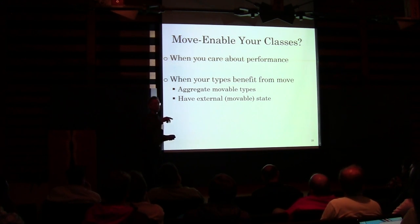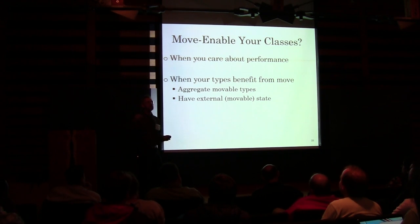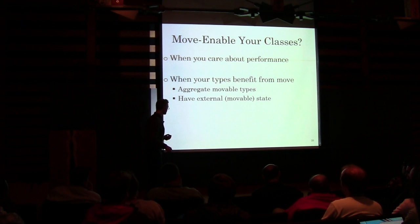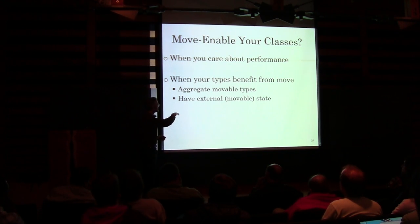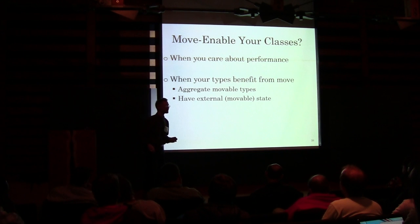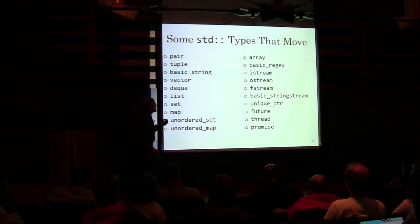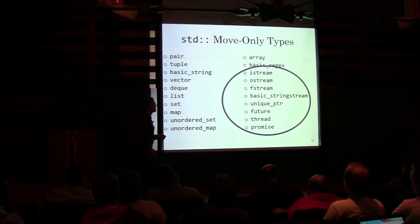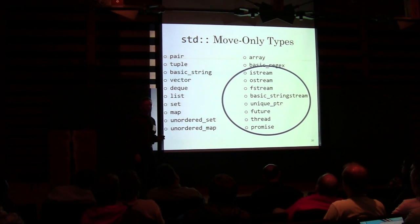The point was there is another motivation to move-enable your classes: if your type doesn't copy but you want to be able to move it. The focus of the rest of the slides will move away from move-only types for the most part, because they're comparatively easy to implement. These are types that move in the standard library — and that subset are all move-only.